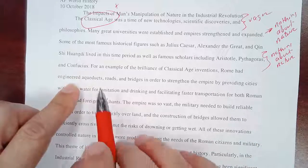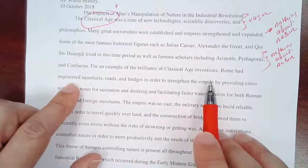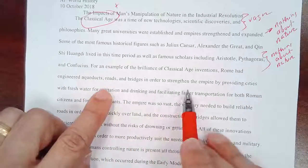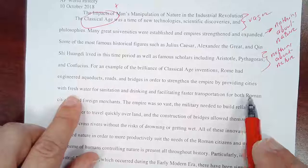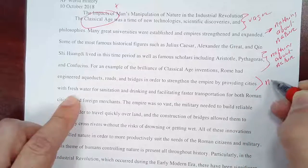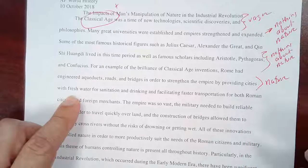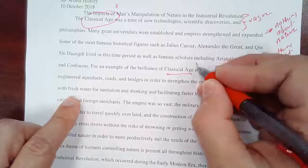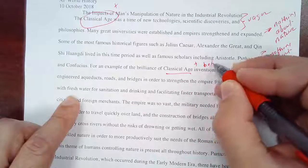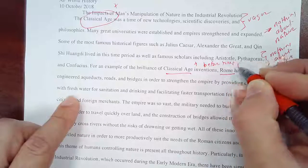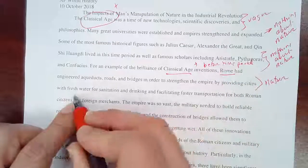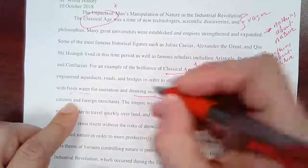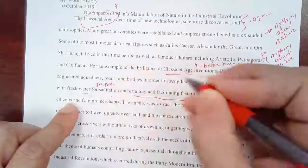But here's where things get good. 'For an example of the brilliance of classical age inventions, Rome had engineered aqueducts, roads, and bridges to strengthen the empire, providing cities with fresh water.' Here we have something about nature and a clear comment. We're talking about Rome during the classical age — that's a plus because we are before the time period — and we're talking about the control of fresh water, which has clear connections to nature.